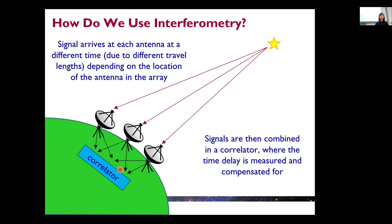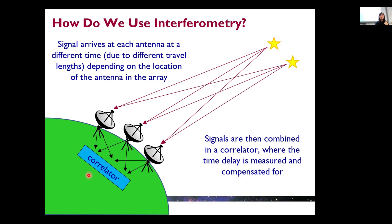Here is an illustration of how interferometry works. If we have a signal from the sky, it would arrive at each antenna at different times because of location variations between these antennas. Once they arrive at each antenna, the signals will be combined in a correlator, where the time delay is measured and compensated for the different antenna locations. You can also imagine that different signals from the sky will also arrive at the same antenna at different times, because they are at different positions in the sky — this provides the spatial distribution of sky brightness.